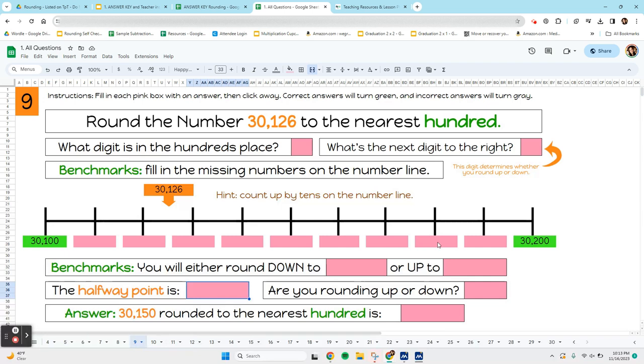So, let's actually round this one. It says, round the number 30,126 to the nearest 100. First of all, 100 is what we're working with, so we need to identify what digit is in the hundreds place. In this case, it's the 1. So, you're just going to click on this box and type the number 1 as your answer.